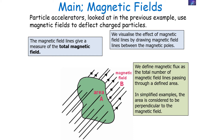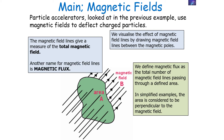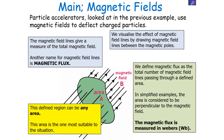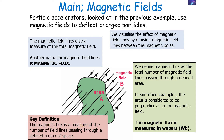In our simplified examples, the area is considered to be perpendicular to that magnetic field. In this particular situation, we can also call the total magnetic field the magnetic flux. The magnetic flux is measured in Webers, or Wb. This defined area can be any area — it tends to be the area that's most suitable to the situation or question asked. So a definition of magnetic flux is: magnetic flux is a measure of the number of field lines passing through a defined region of space, which you yourself can define.